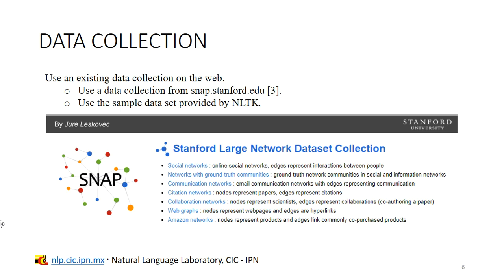We can also use an existing data collection on the web. There are countless websites when we can download data sets collections. For example, from Snap, which is a large network data set collection that belongs to Stanford, that offers more than 50 large network data sets. It includes social networks, web graphs, road, internet, citations, and communication networks. Also, we can use data collection offered by some libraries or toolkits. That is the case of the NLTK toolkit or Scikit-learn library for Python.